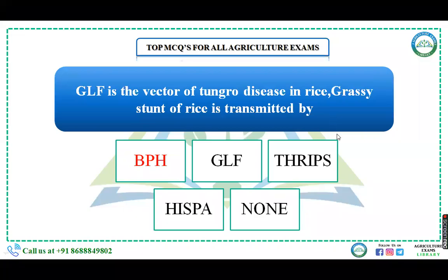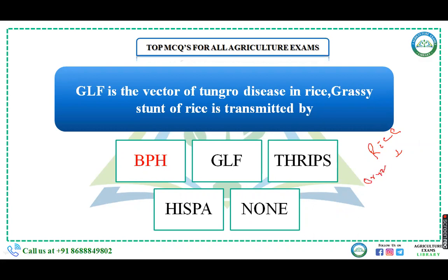Hello everyone, today in this video we are going to discuss a few important questions regarding agronomic crops. First, we will choose rice as our economic crop. The botanical name of rice is Oryza sativa, which belongs to the family Gramineae or Poaceae.